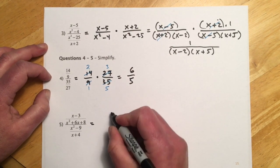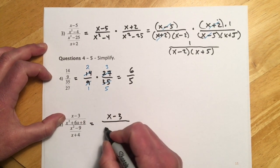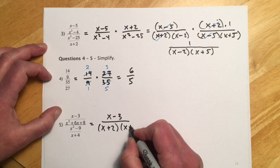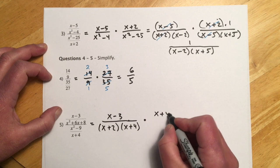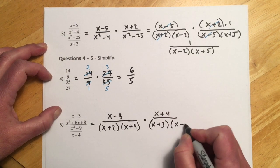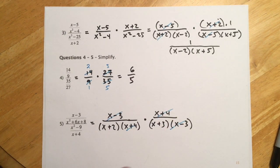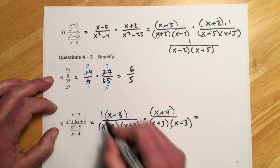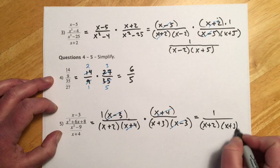This one is similar. x minus 3, and factoring as I go — multiplies to 8, adds to 6 — gives (x plus 2)(x plus 4). Then times the flipped fraction: x plus 4 up top, and the denominator factors to (x plus 3)(x minus 3). Cancel what we can. Nothing is left up top, so think of it as 1. Downstairs: (x plus 2)(x plus 3).